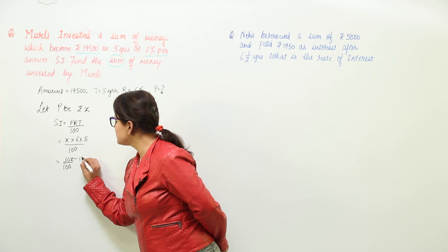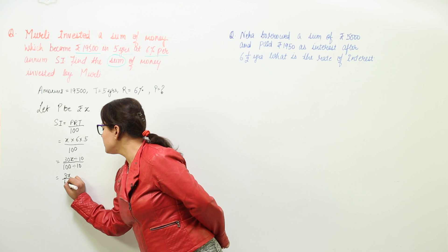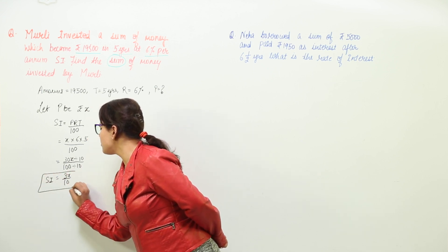So I will divide them with 10 both. And I land up with 3x upon 10. So my simple interest comes out to be 3x upon 10.